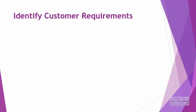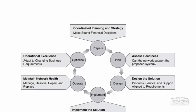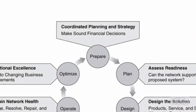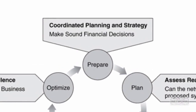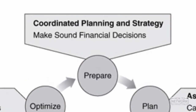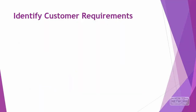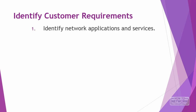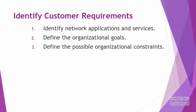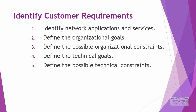To obtain customer requirements, you need to talk not only to network engineers but also to business personnel and company managers. Networks are designed to support applications, and you want to determine the network services needed both now and in the future. This analysis is broken into five steps: identify network applications and services, define organizational goals, define possible organizational constraints, define technical goals, and define possible technical constraints.